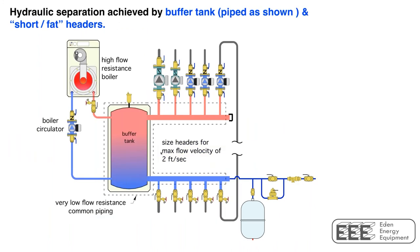A buffer tank — whether piped in a four-pipe arrangement, which is shown here — last week we talked about two-pipe and three-pipe as well. All three piping configurations — four-pipe, three-pipe, two-pipe — can provide hydraulic separation. The key is keeping the flow resistance through what we call the common piping as low as possible. I have it outlined here with a dashed line: anything inside that dashed line is part of the common piping. Keep the flow resistance of the common piping as low as possible and you'll have a high degree of hydraulic separation.